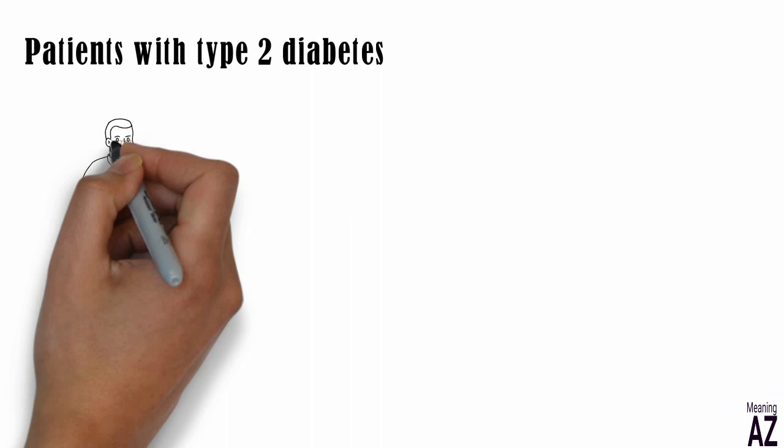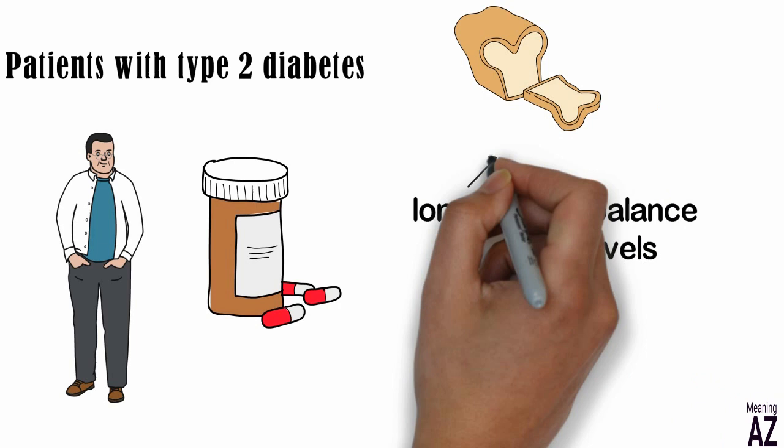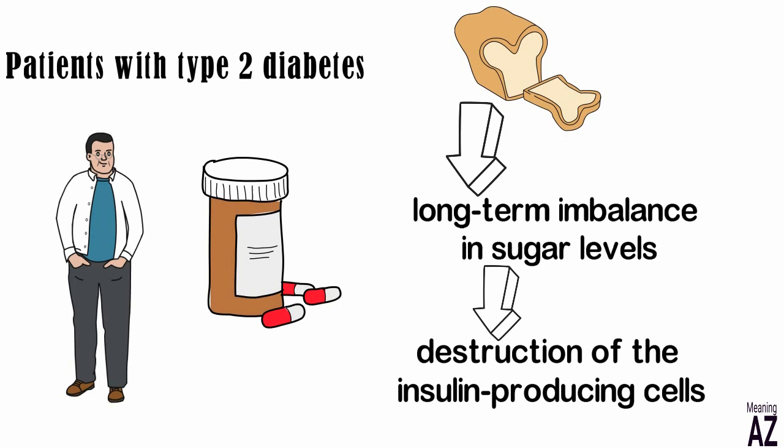Patients with type 2 diabetes are treated with sugar lowering pills. Long-term imbalance in sugar levels as a result of overeating carbohydrates may lead to the destruction of the insulin producing cells in the pancreas and to dependency on insulin injections as in type 1 diabetes.